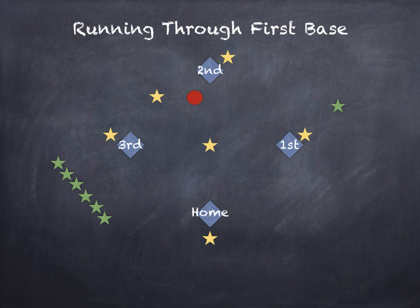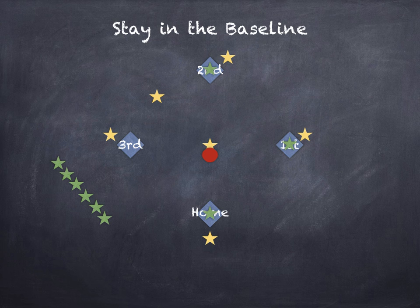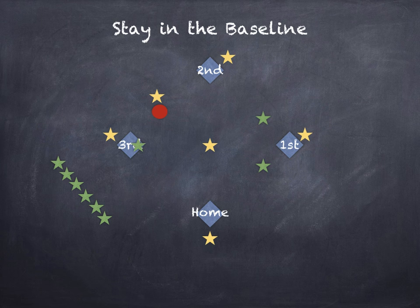If you run through second base and the person tags you, you're going to be out. The next rule for base running: you have to stay in the baseline. Imagine an imaginary line right straight in between each base — you have to run on that line. You can't run all the way around a fielder to avoid getting tagged. If you run all the way around them, you're out anyway. You have to stay in the baseline.